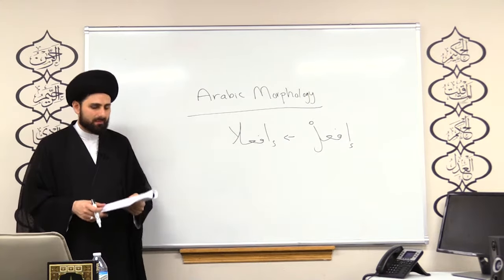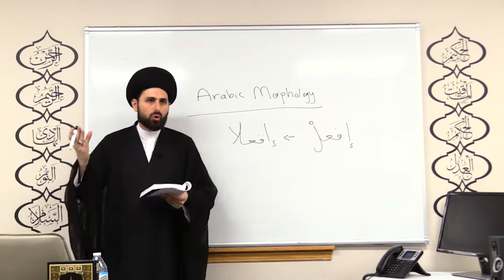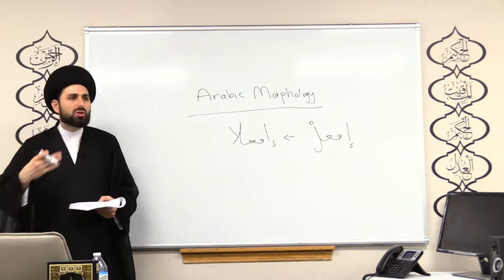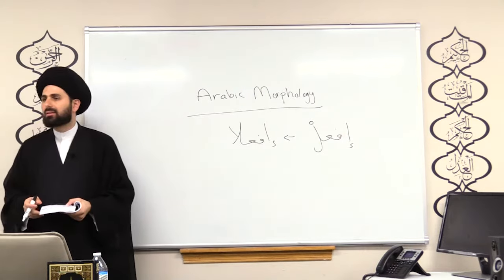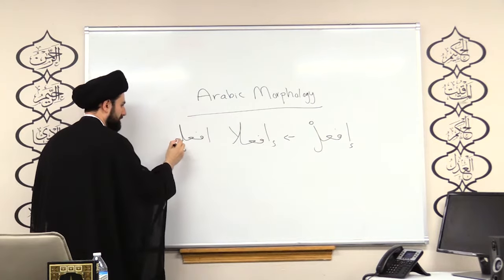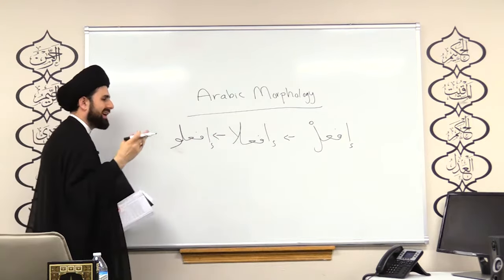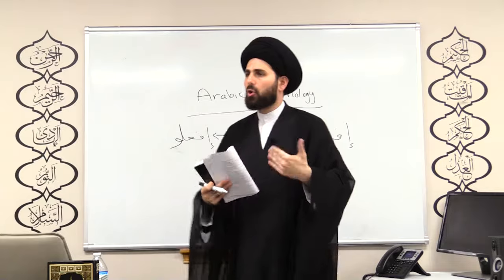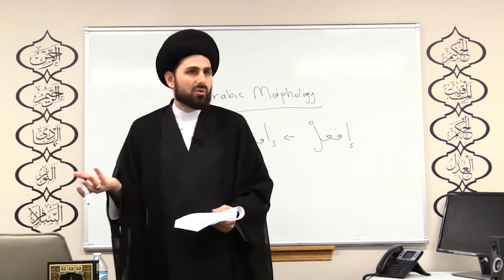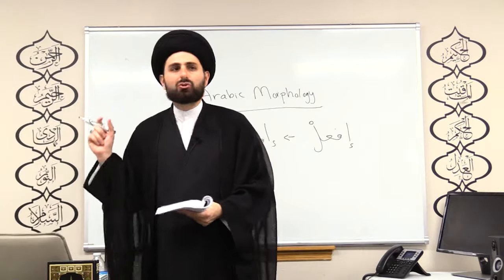Third form — if your subject is a plural group of males and you want to issue a command, instead of alif you add waw: if'alu. So: ishrabu, ijlisu, urkudu, unsuru. Again, the nun is dropped because the verb is majzoom. In the plural masculine form, words like yashrabuna have the nun, but because this is majzoom, the nun of plurality is dropped. Note: the alif that appears after the waw in writing is just for calligraphic purposes — it is a silent letter, not pronounced.